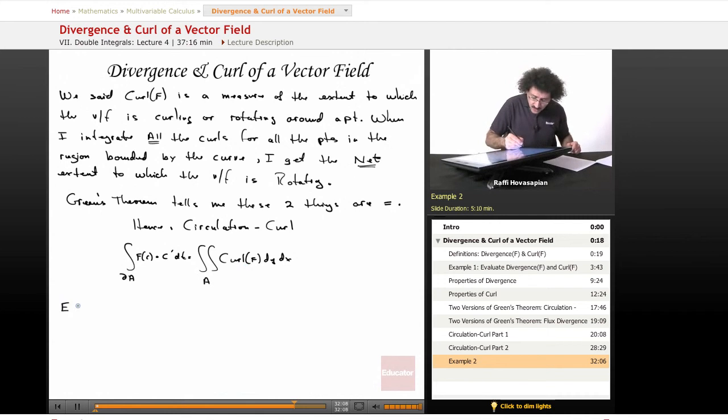So let's go ahead and do an example and finish it off that way. Example two, we use the same vector field as before. So we have f is equal to cosine of xy and sine of x squared y.